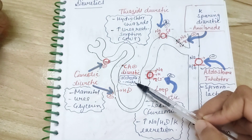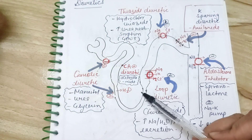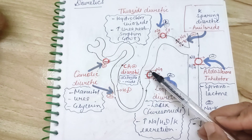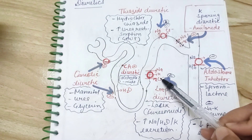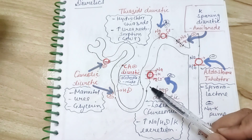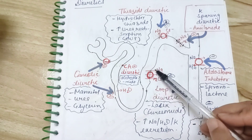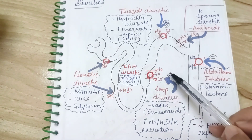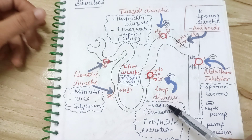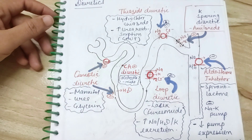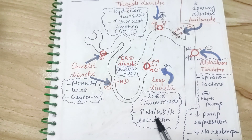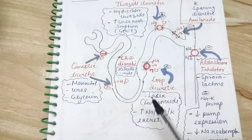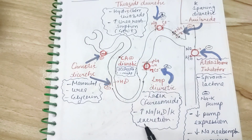Moving toward the ascending loop of Henle, there is the sodium-potassium-2-chloride transporter located here. This channel is inhibited by loop diuretics. Examples are Lasix or furosemide. It basically inhibits sodium reabsorption and hence promotes its excretion.